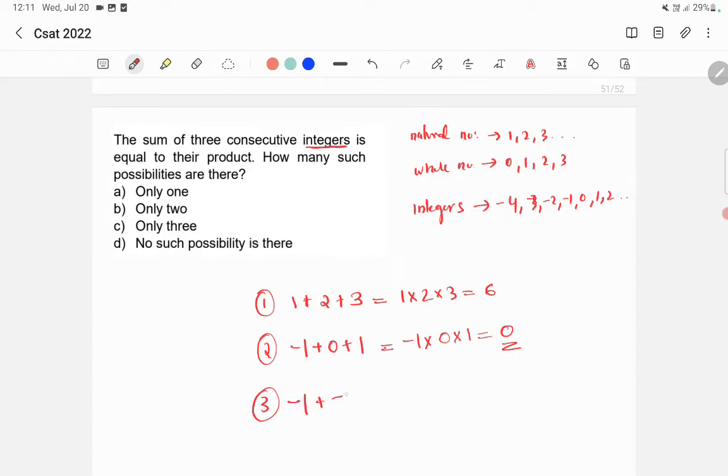Similarly, -1+(-2)+(-3), these are also consecutive integers, equals -1×(-2)×(-3) = -6. So there are three possibilities. Option C, 'only three,' is the right answer.